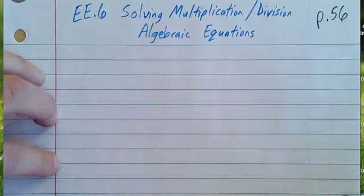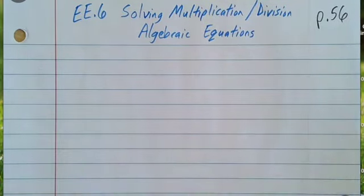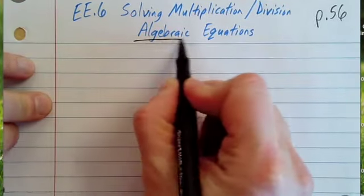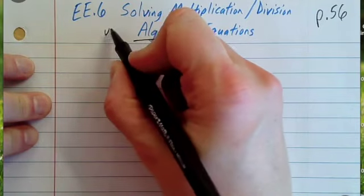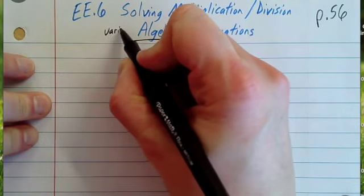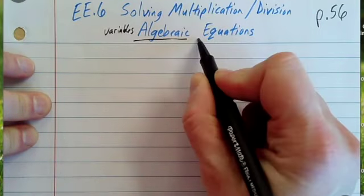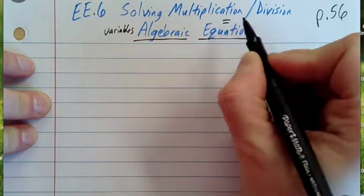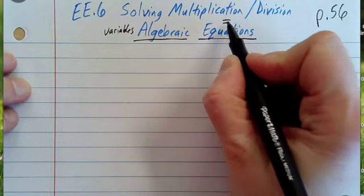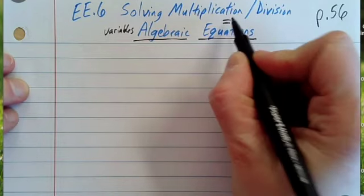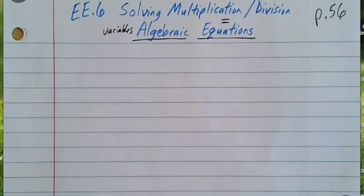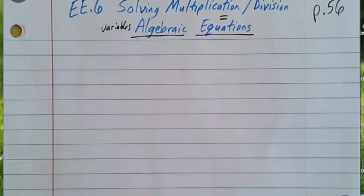Algebraic means they have variables. Equations mean they have to have an equal sign. Just like with addition and subtraction, we did the inverse operation — the opposite. You do the same thing with multiplication and division.